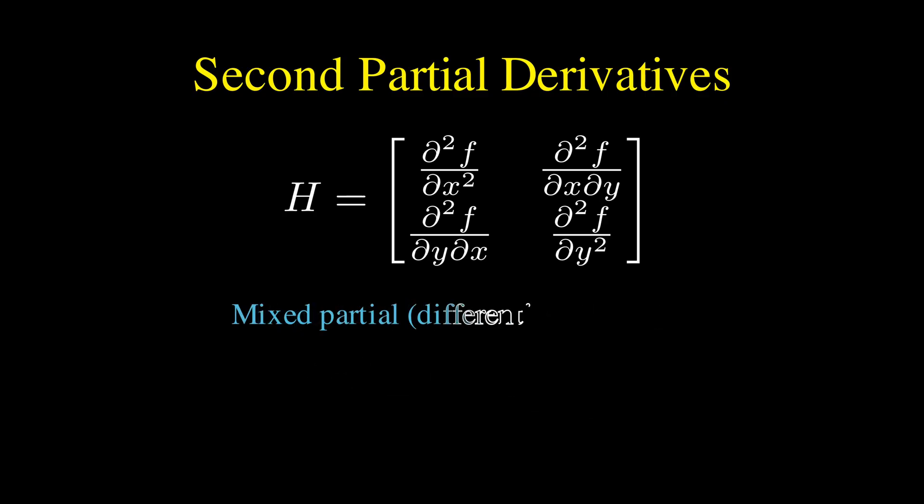The mixed partial derivative, where we differentiate with respect to x first and then with y, or with y first and then with x, gives us one-half e to the x divided by 2 cosine of y, because the derivative of sine becomes cosine.